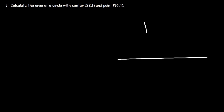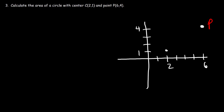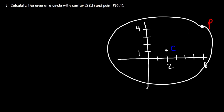For number three, calculate the area of a circle with center (2, 1) and point P at (6, 4). Let's start with a graph. Point P is located at (6, 4) and the center of the circle is at (2, 1). We can draw a circle around the center. The distance between the center and a point on the circle is the radius, so we'll use the distance formula to find it, and then use the area formula: area equals pi r squared.